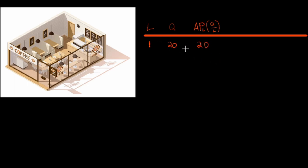You're getting tired doing everything, so you hire a second person. Now you're running the cash register while the second person handles the espresso machine and baked goods, and when things are clear one of you buses tables. With two workers, output jumps to 44 cups of coffee per hour. On average, that's 22 cups per person — we get more output per person because we can specialize.